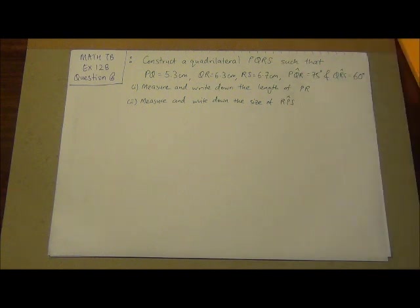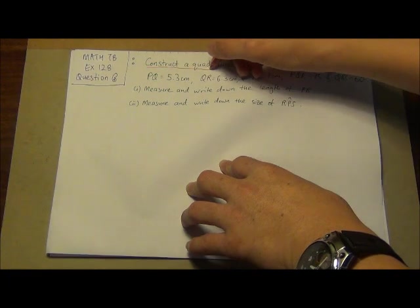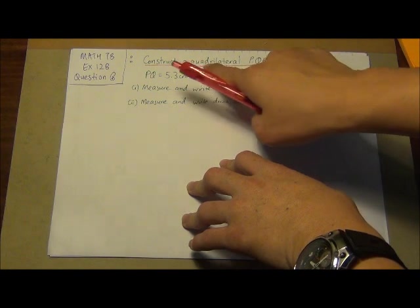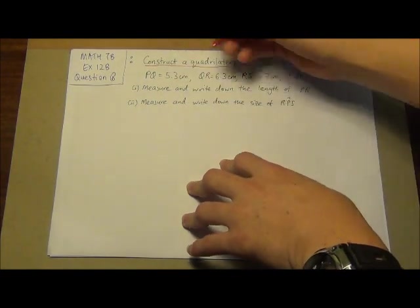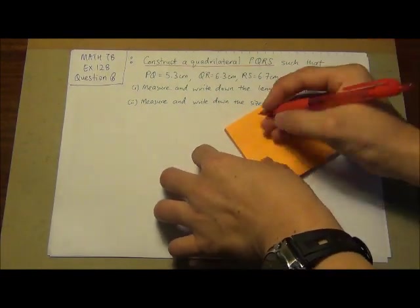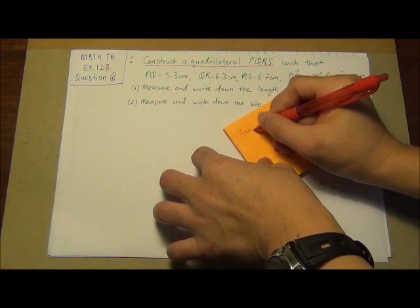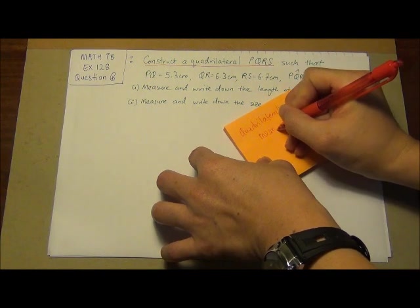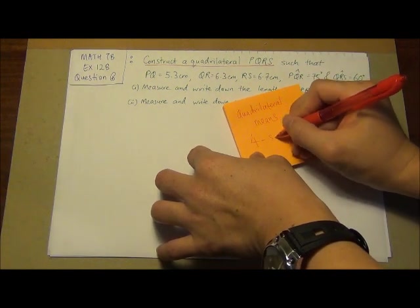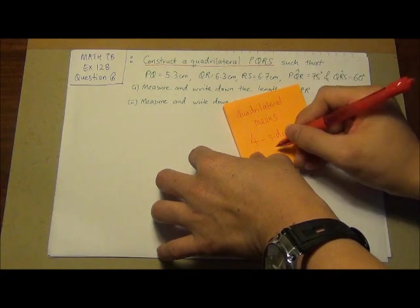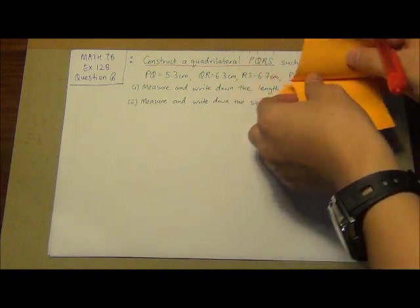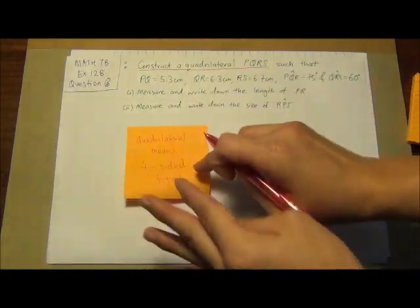Let's take a look at some technical terms for this. Firstly, construct a quadrilateral PQRS. What does quadrilateral mean? Quadrilateral means that it is a four-sided figure.